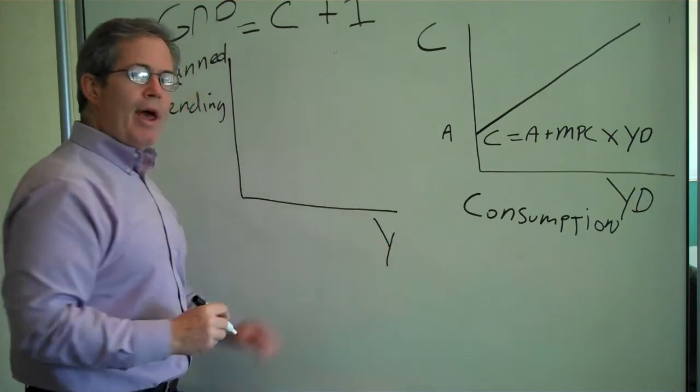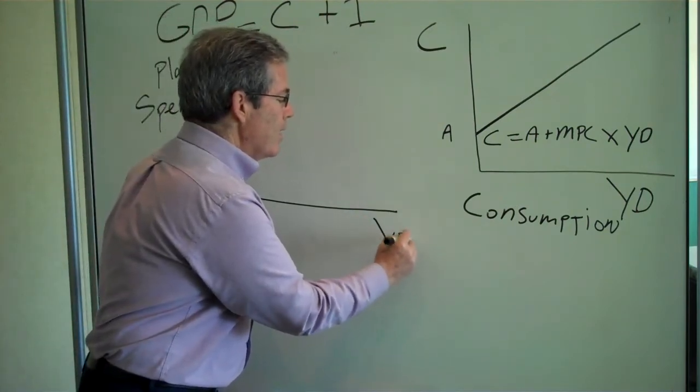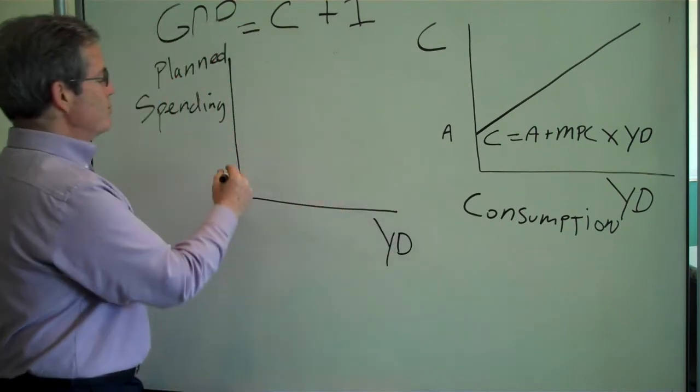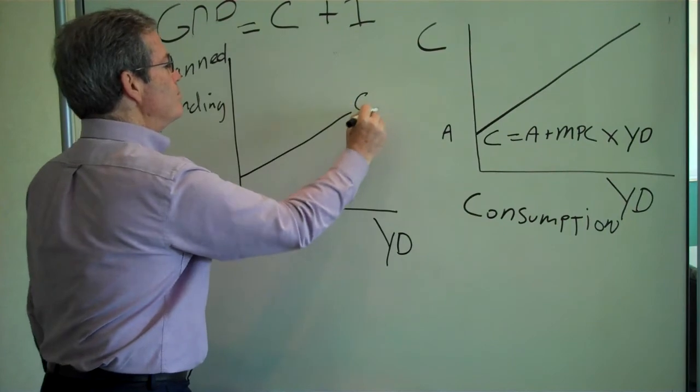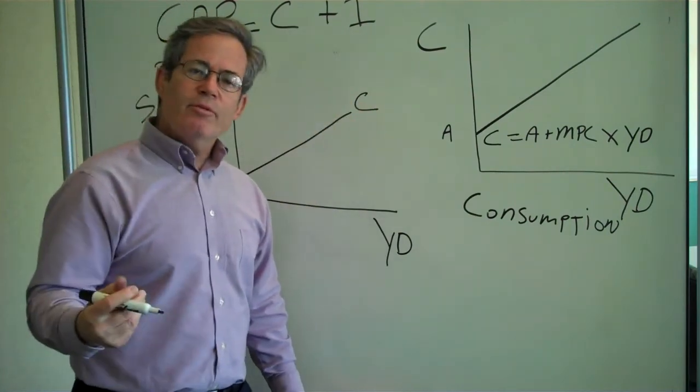So we have the consumption. Down here, by the way, we have, once again, income, disposable income. So we have the consumption. And we want to add to that investment.